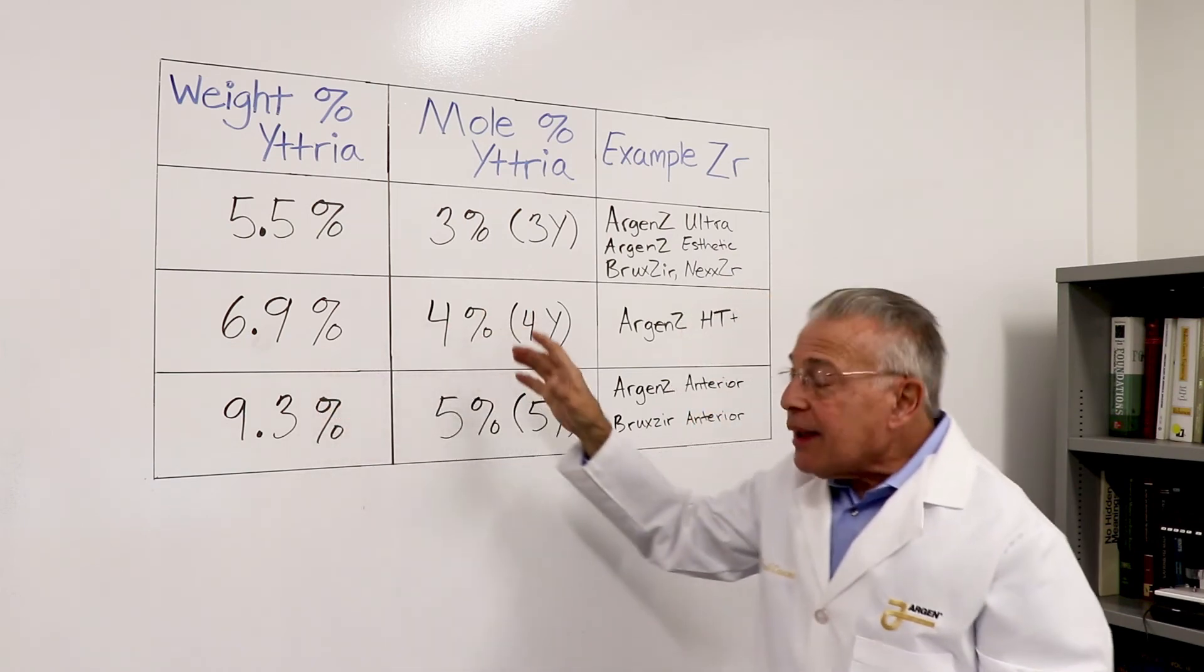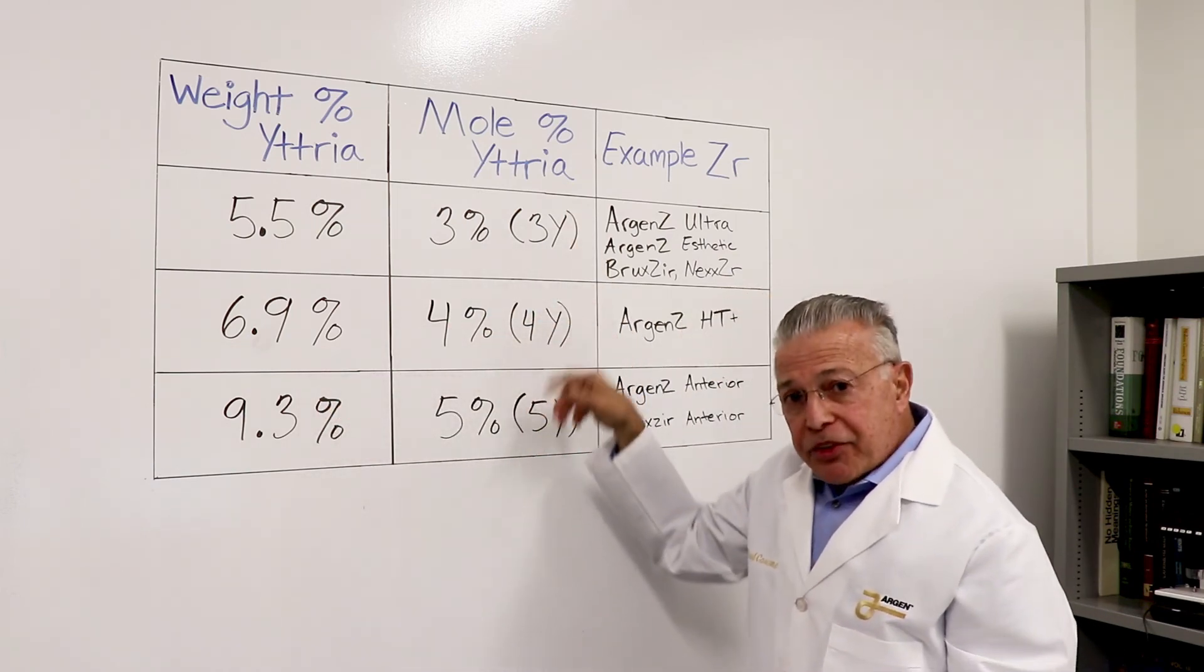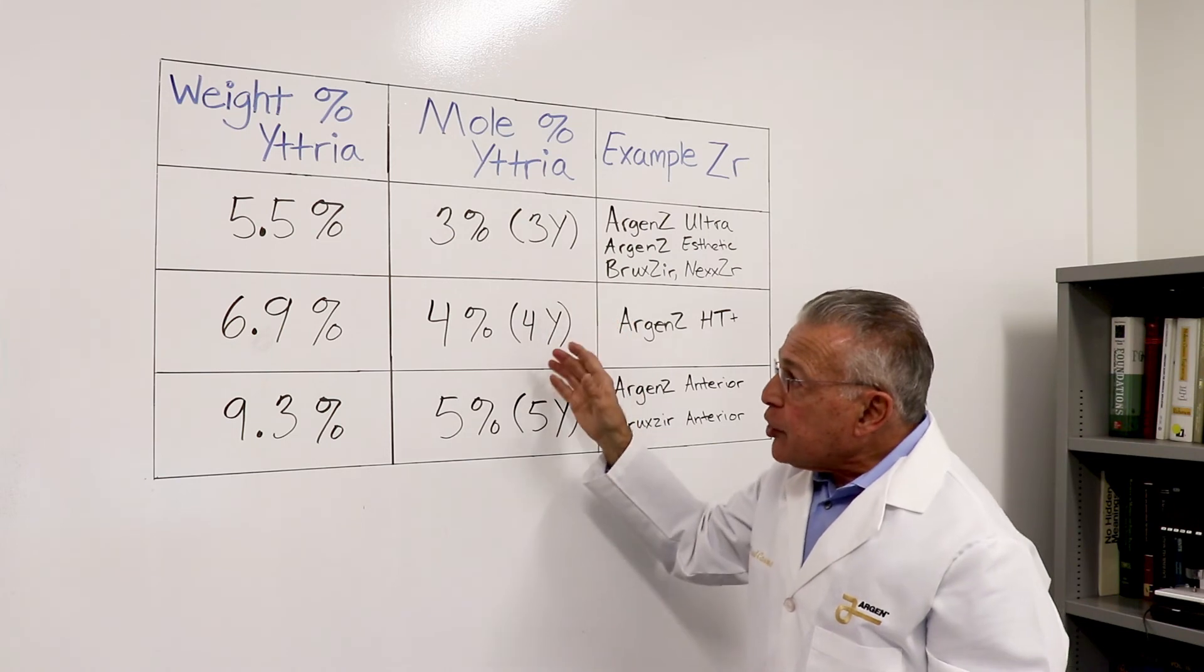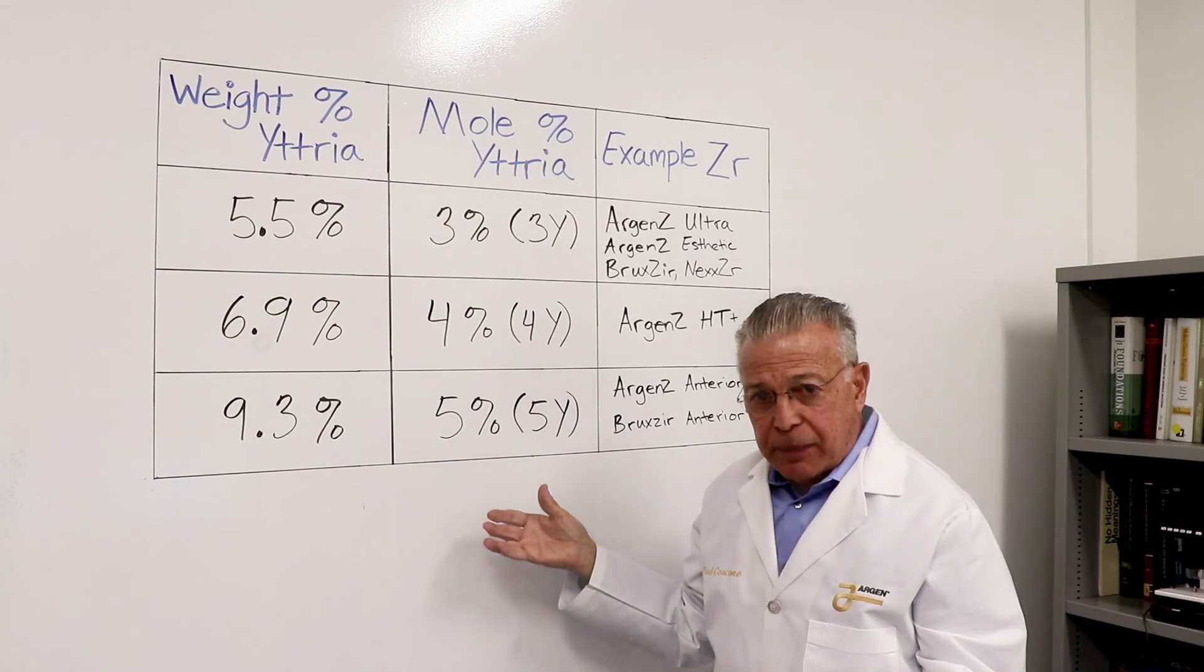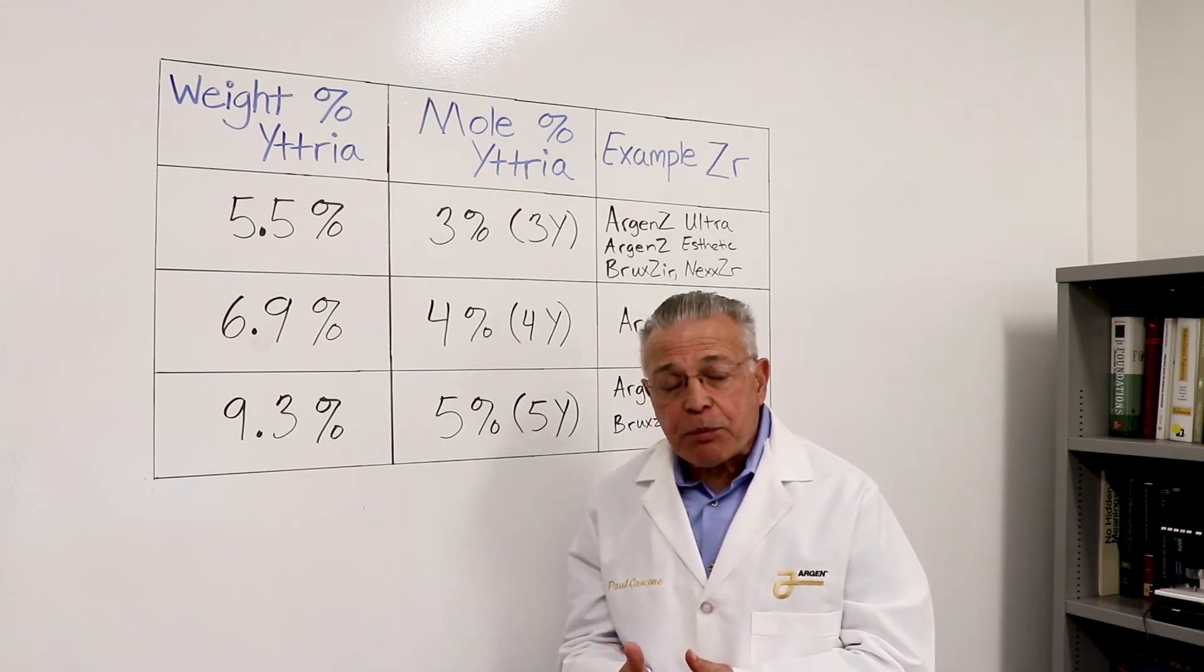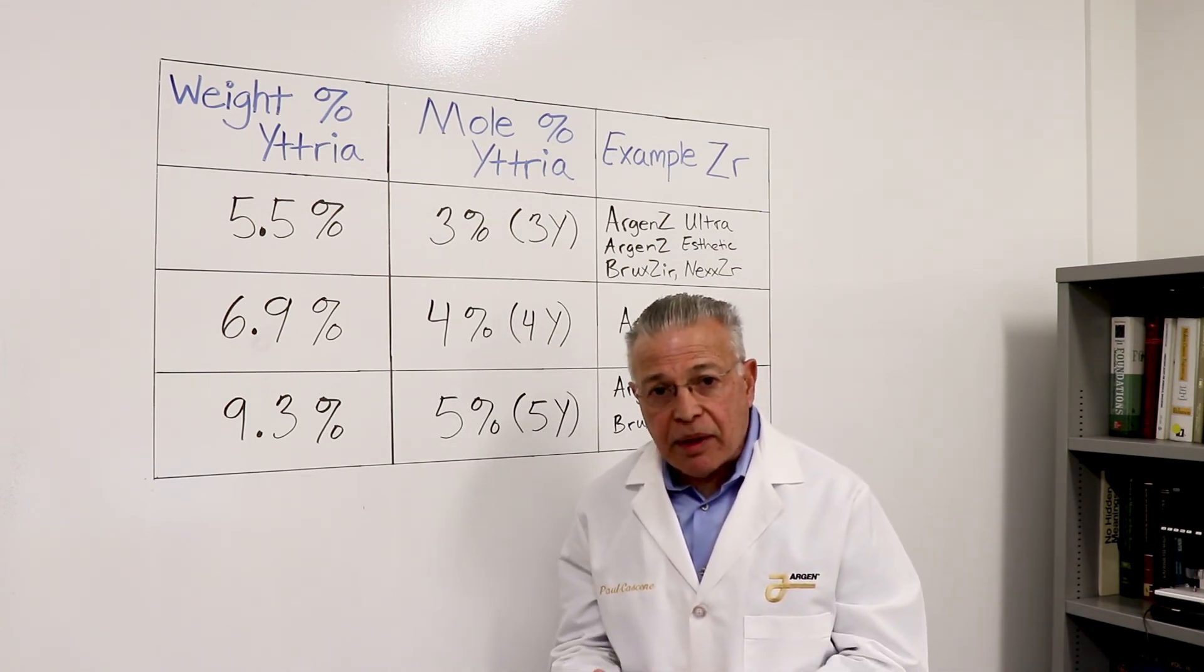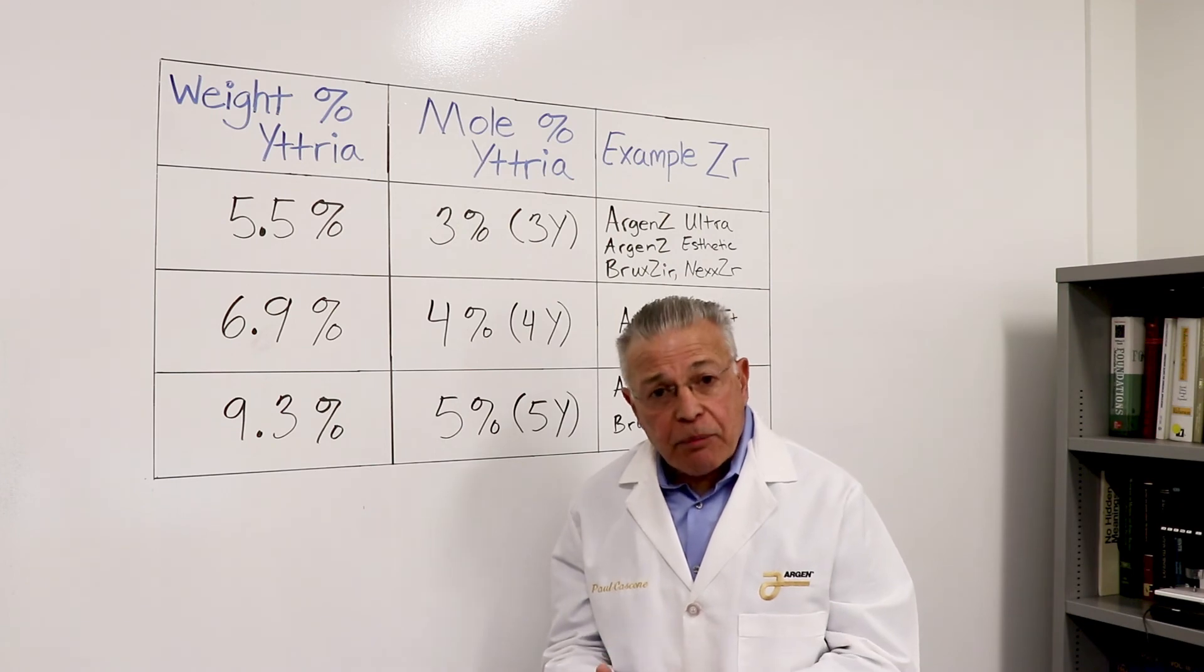So don't let the numbers upset you. The numbers are associated with the amount of yttria in the material, just another way of expressing it. If you have any questions about this, please don't hesitate to call or email us. And thank you very much for watching.